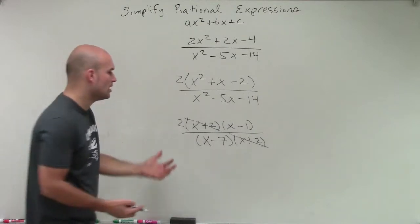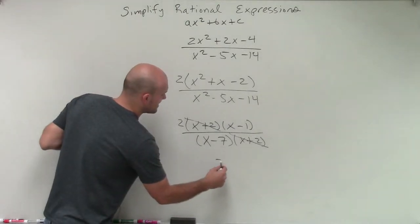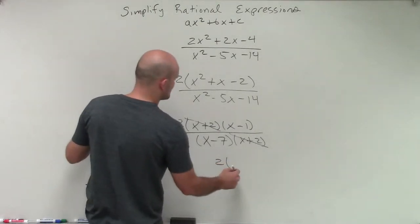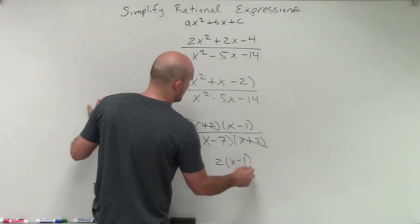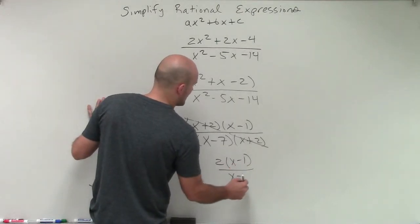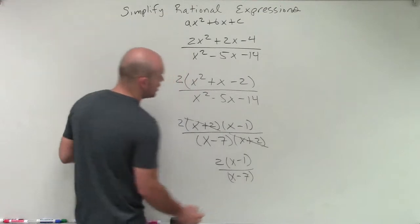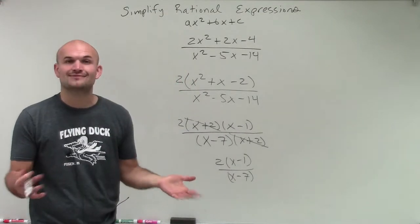Therefore, that divides out to 1. So that's just going to leave me with a final simplified rational expression of 2 times x minus 1 divided by x minus 7 that I can no longer further simplify or factor out.